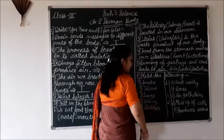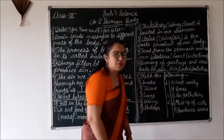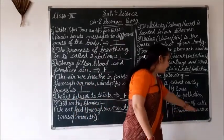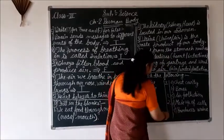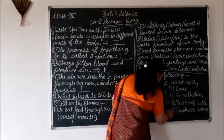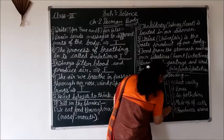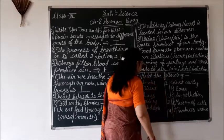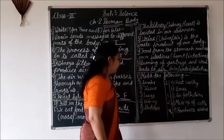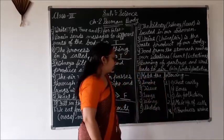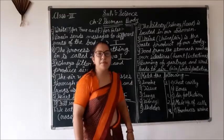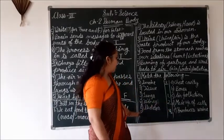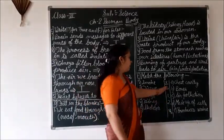The kidney — what does it produce? As a waste product, the kidney produces urine. And skeleton — skeleton is made up of bones. So the answer is bones.